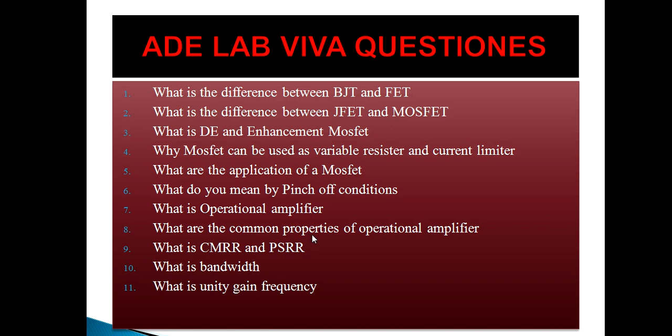What is the difference between a junction field effect transistor (JFET) and MOSFET? JFET has two types: N-channel and P-channel. In MOSFET we have depletion MOSFET and enhancement MOSFET. The input impedance of a JFET is 10 to the power 9, but in MOSFET the input impedance is very high compared to JFET. In MOSFET, gate leakage current is in picoamps, whereas in JFET it is in nanoamps.